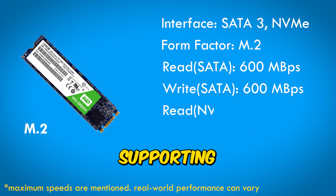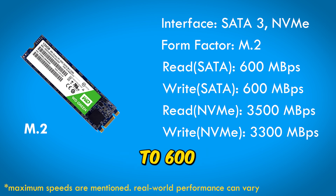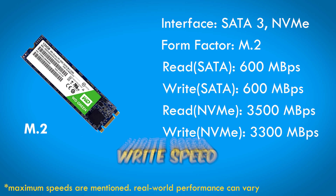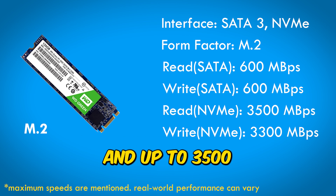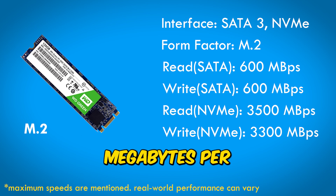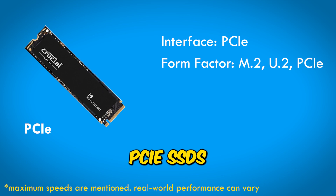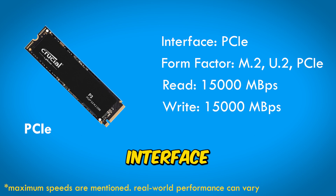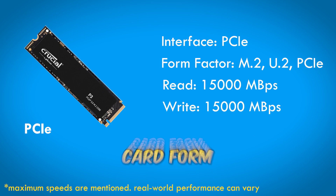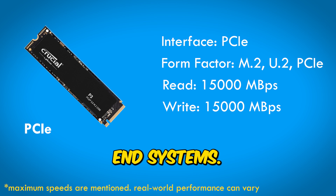M.2 SSDs, supporting both SATA and NVMe interfaces in M.2 form factor, provide up to 600 MB/s read and write speeds in SATA mode, and up to 3,500 MB/s read and 3,300 MB/s write speeds in NVMe mode. PCIe SSDs, using PCIe interface in M.2, U.2, and PCIe card form factors, offer up to 15,000 MB/s read and write speeds for high-end systems.